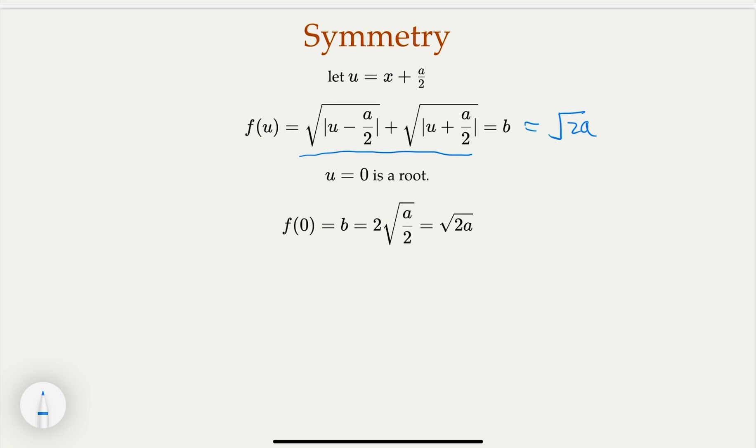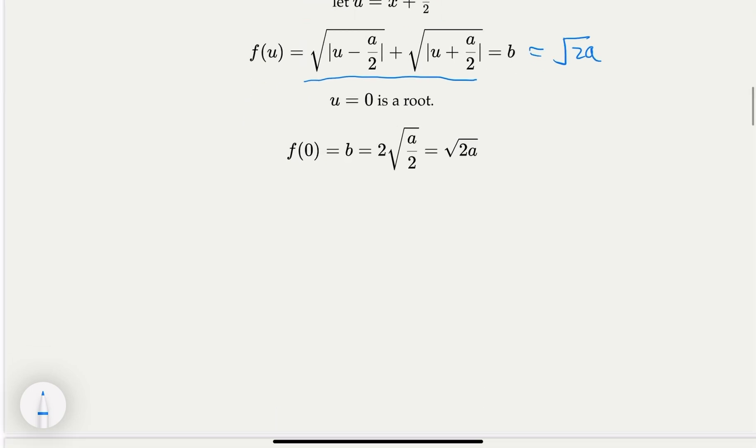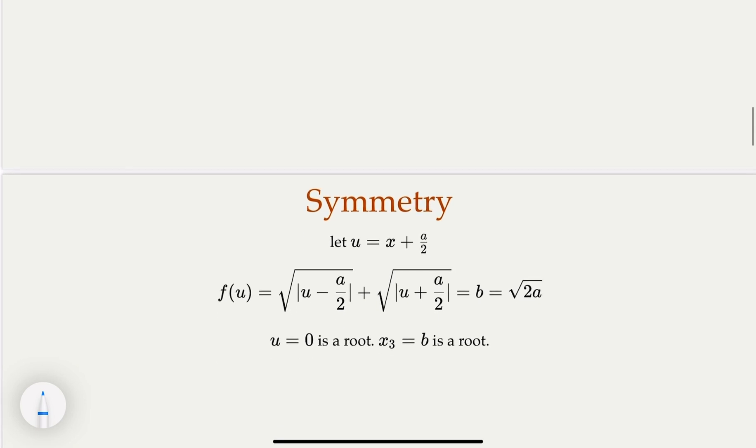Now remember, we are given that one of the original equations has x₃ equal b as the root. We're going to take advantage of that. So originally x₃ equal b as the root. In the new equation in u, the root would be u equal, remember, the substitution is b plus a over 2 must be a root.